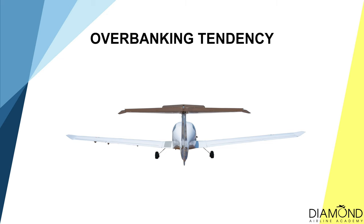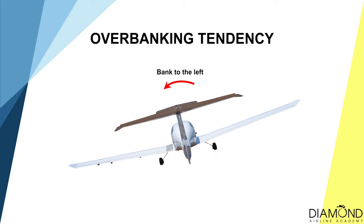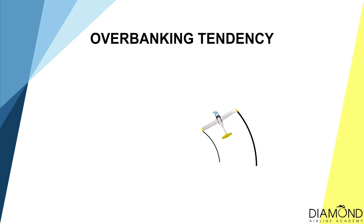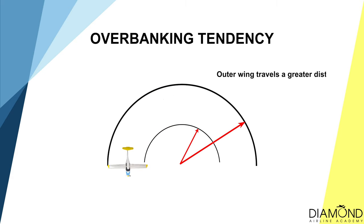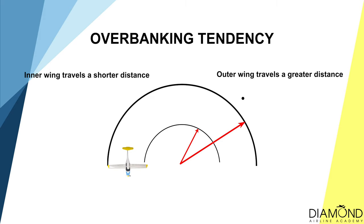On the other hand, during a climbing turn, the aircraft will be affected by the overbanking tendency — the aircraft will continue to bank towards the direction of the turn, increasing the angle of bank. How does this tendency happen? There are two main reasons. First, imagine we're banking to the left, so the aircraft will be turning left. The right wing will be travelling at a faster speed than the left wing because, under the same amount of time, the outer wing travels a greater distance. Therefore, the right wing will be producing more lift than the left wing, and when there is uneven lift between the two wings during a climbing turn, the aircraft will overbank.